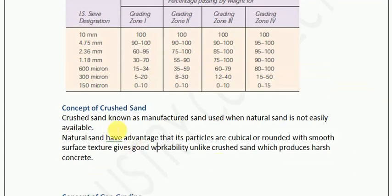Now, along with this, let us understand the concept of crushed sand. Sand for construction activities can be available in two ways: first is crushed sand, and second is natural sand. Till now we have been using natural sand, which is naturally produced. But now, due to environmental concerns, this is not available in huge amounts, so we are producing or manufacturing sand which is known as crushed sand. Natural sand has the advantage that its particles are cubical or rounded with smooth surface texture, giving good workability. Unlike crushed sand, which produces harsh concrete. Natural sand has round particles and smooth surface, so concrete is able to flow with less friction. But crushed sand is artificially produced and particles are angular, giving less workability.